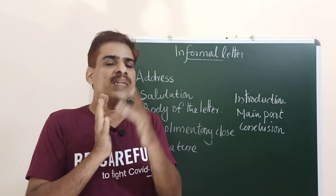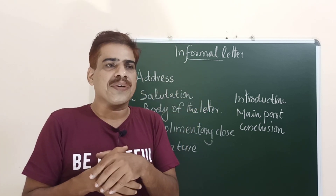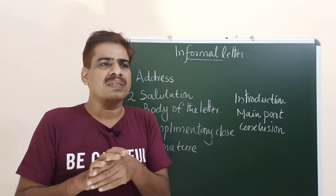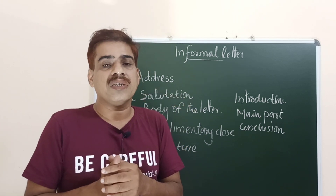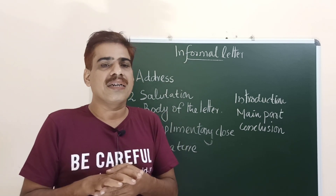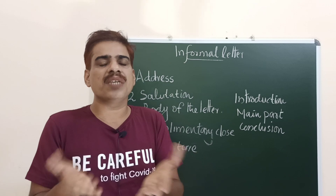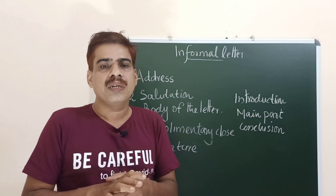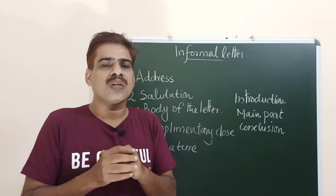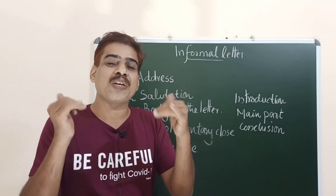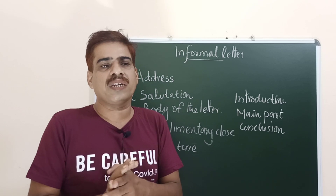Then comes the body of the letter, which has three parts: introduction, main body, and conclusion. For the introduction of an informal letter, you can write in various ways, such as: 'How are you? Hope you are fine,' or 'Hope you are keeping fine.' You can also write: 'I got your letter,' 'I am glad to receive your letter,' 'I am happy to receive your letter,' or 'It has been a long time since we wrote to each other.'